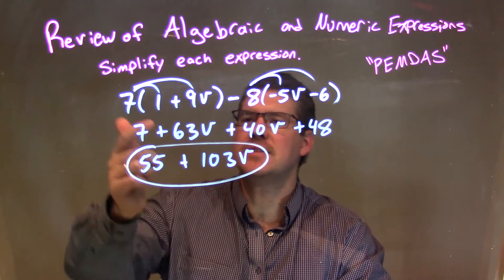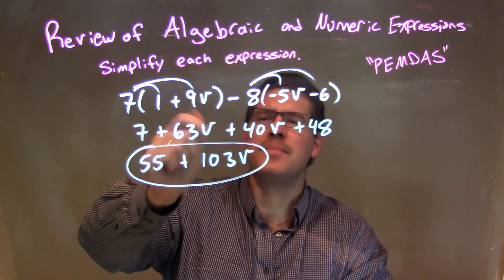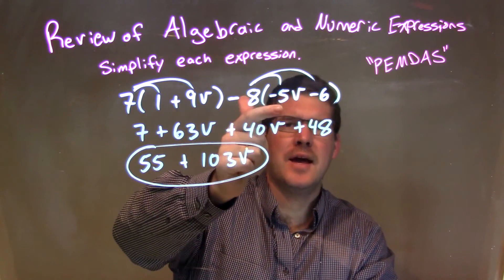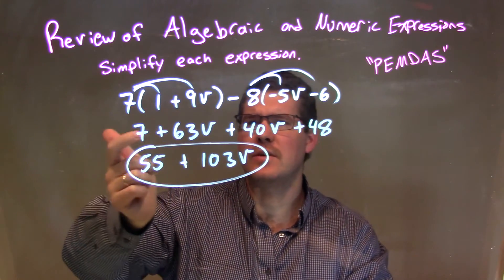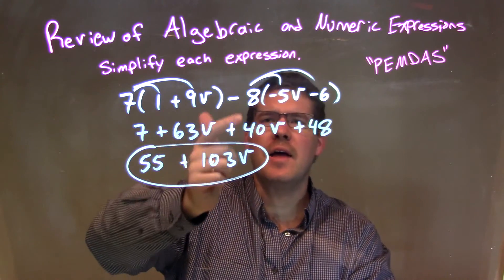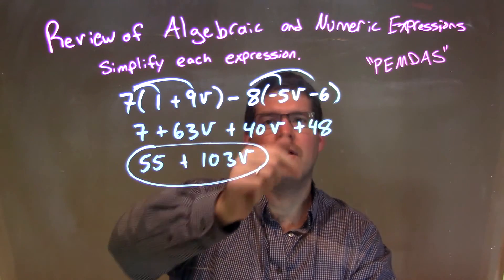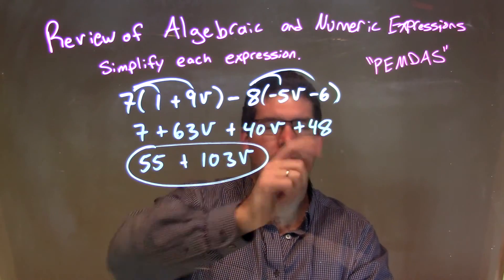So, as a recap, we're given 7 times (1 plus 9b) minus 8 times (negative 5b minus 6). I distributed 7 to both parts, giving me 7 plus 63b, and I distributed this minus 8 to both parts, giving me a positive 40b and a positive 48.